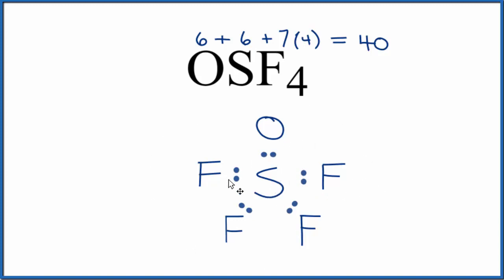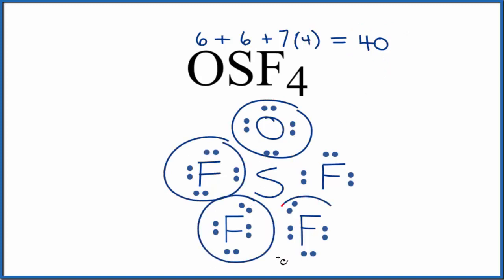Let's complete the octets on these other atoms here. So at this point we've used all 40 valence electrons. We have octets for all of these atoms here, and then the central sulfur has more than 8, but that's okay, it can have an expanded octet.